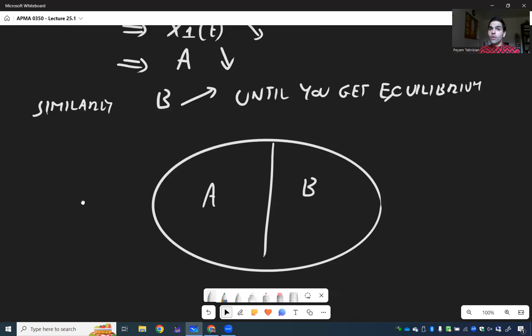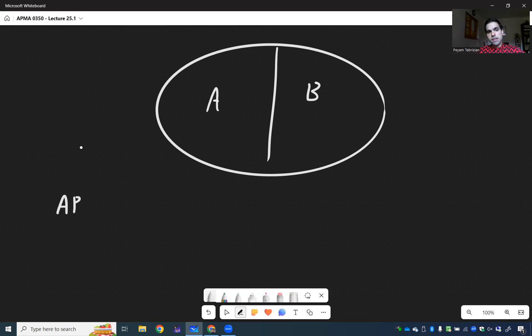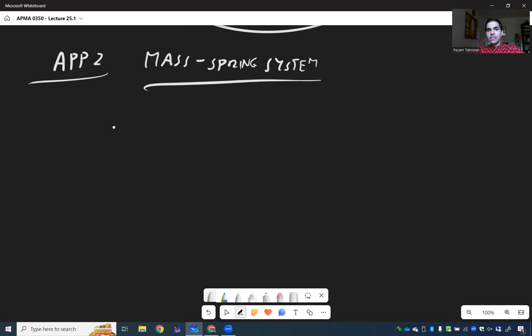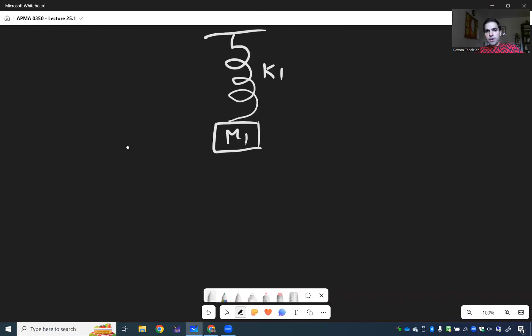The second equation I wanted to talk about or the second application is a fancier version of the mass spring equation called the mass spring system where in this case you don't just have one mass related to one spring but two masses coupled together. So this is M1, this is the first spring with K1, but then M1 is attached to another spring and another mass M2 and then actually a third spring.